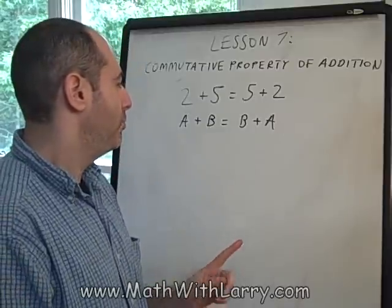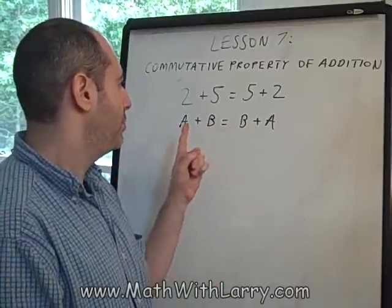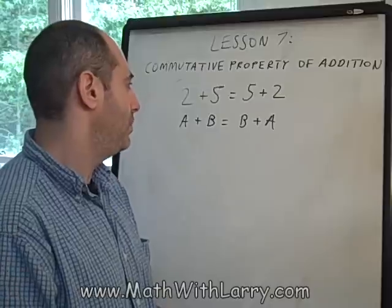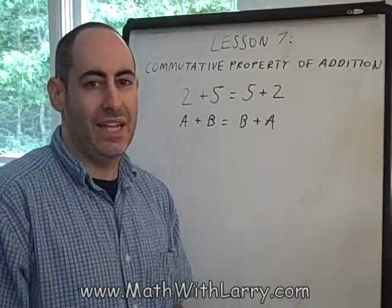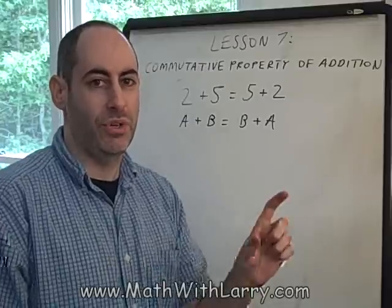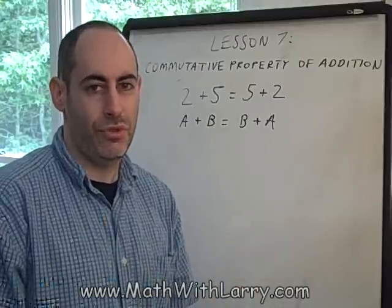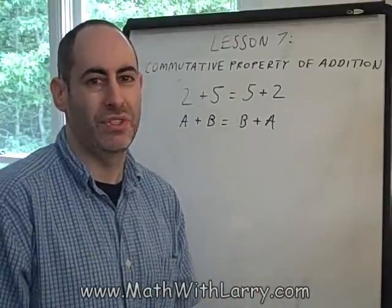Now, think about subtraction for a moment. If you think about subtraction, you'll notice that this property does not apply to subtraction. 5 minus 2 is not the same thing as 2 minus 5. In subtraction, we're not allowed to just simply reverse the order of our two numbers. It would give us a different answer.